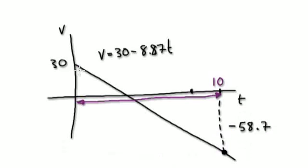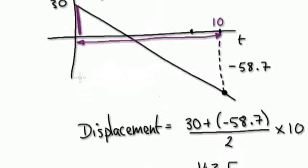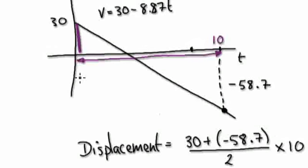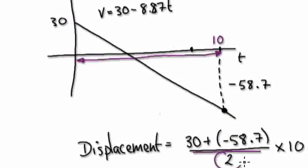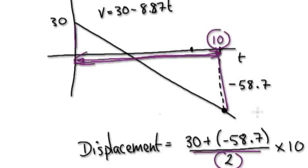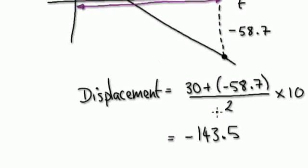Now use the trapezium rule. Get this height, which is 30, and then add this value here — which is negative 58.7 — and divide by 2. That gives you the average of the two heights, then multiply by the total length of 10 seconds. That gives you the answer.